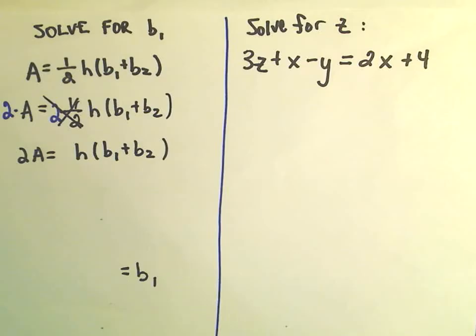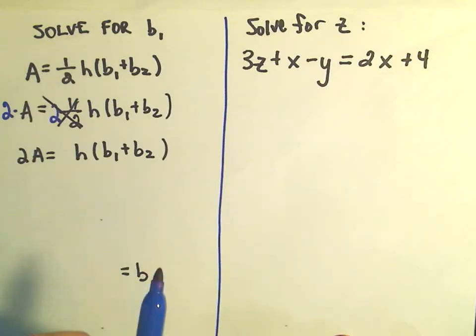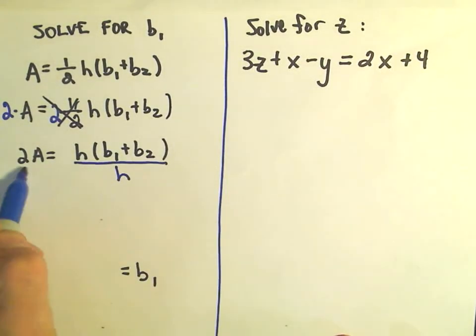And now I want to get, there's again a couple different ways I could do it. Since I'm multiplying by h, I would like to get rid of that. So again, multiplying by h, I'll divide both sides by h.